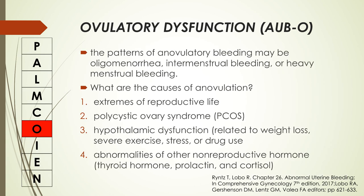The patterns of anovulatory bleeding may be oligomenorrhea, intermenstrual bleeding, or heavy menstrual bleeding. The causes of anovulation include extremes of reproductive life, polycystic ovarian syndrome, hypothalamic dysfunction related to weight loss, severe exercise, stress, or drug use, and abnormalities of other non-reproductive hormones such as thyroid hormones, prolactin, and cortisol.